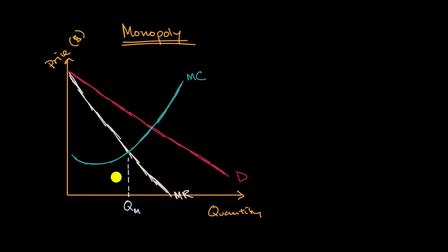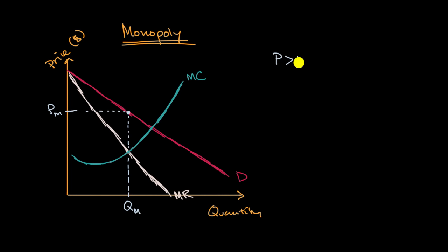What's the price? To find that, we look at the demand curve at this quantity — the price is right over here; we could call that the market price. Something interesting has happened: in a perfectly competitive firm, where the marginal cost and demand curves intersect dictates the quantity, because the demand and marginal revenue curves were the same. But here, we are producing a quantity less than that.